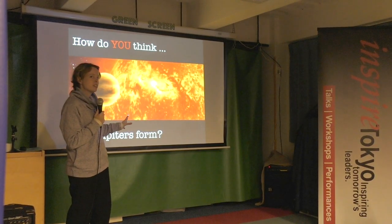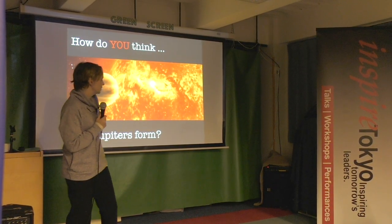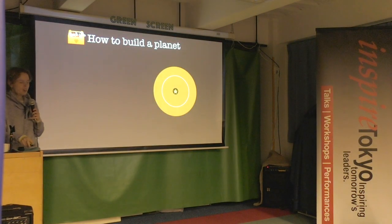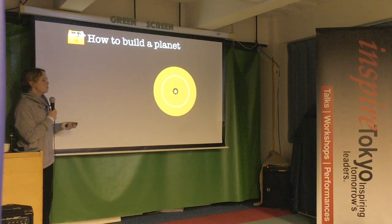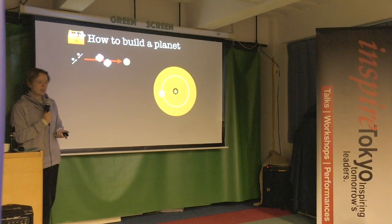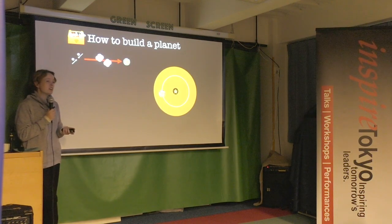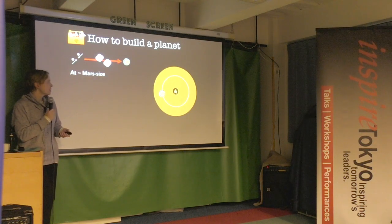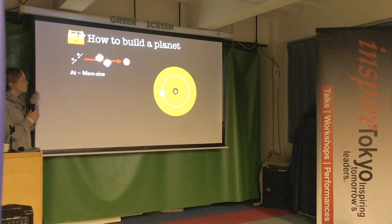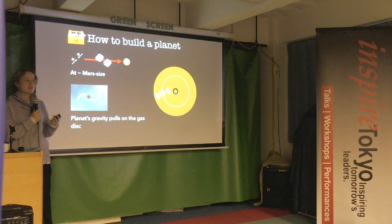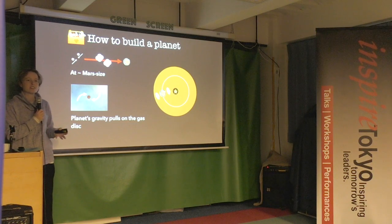The main theory starts with planet building: dust sticks together, rocks grow bigger and bigger, and eventually we reach something the size of Mars. Mars is actually a small planet — only a tenth of Earth's mass — but at Mars size something important happens: the planet's gravity becomes strong enough to pull on the surrounding gas and dust in the protoplanetary disk.